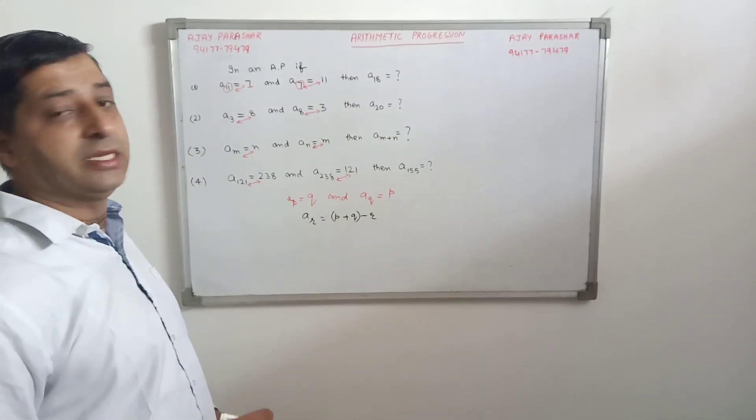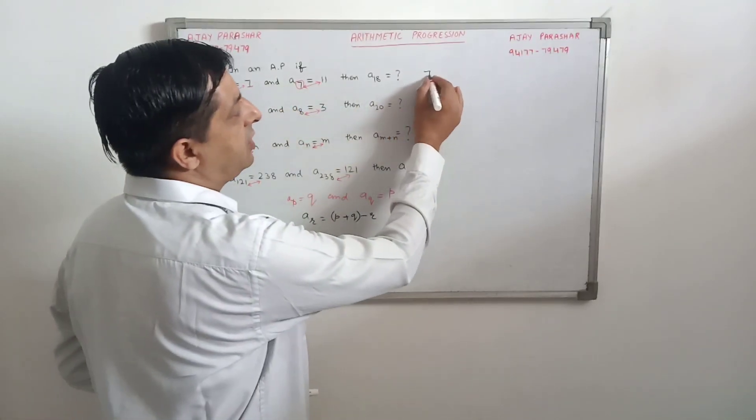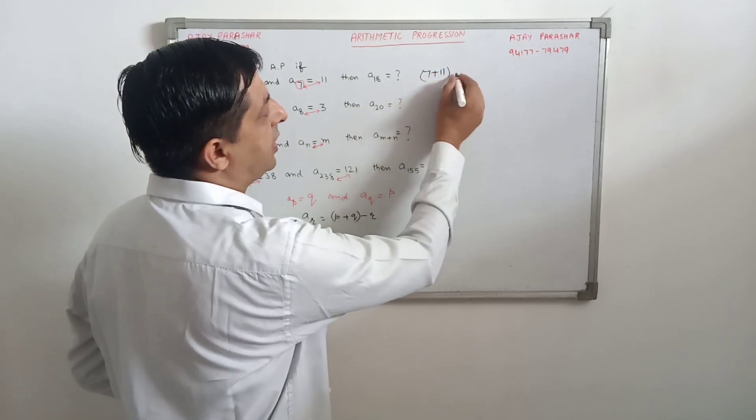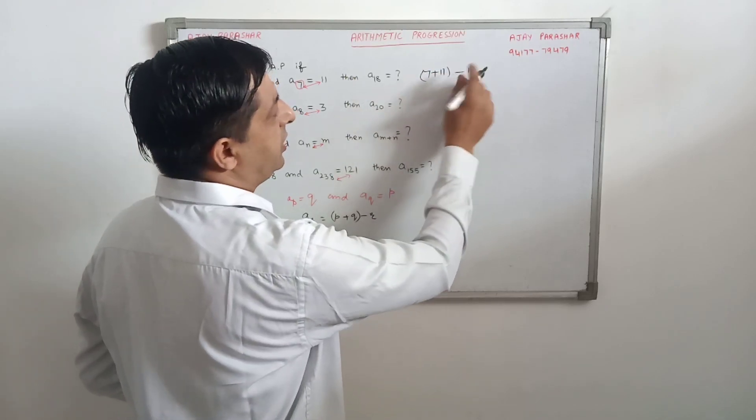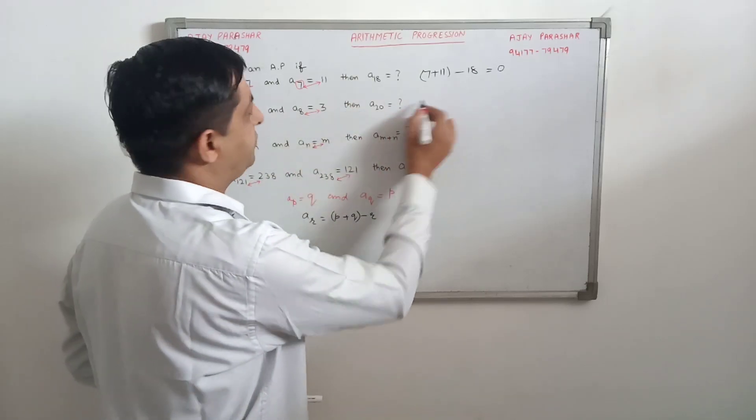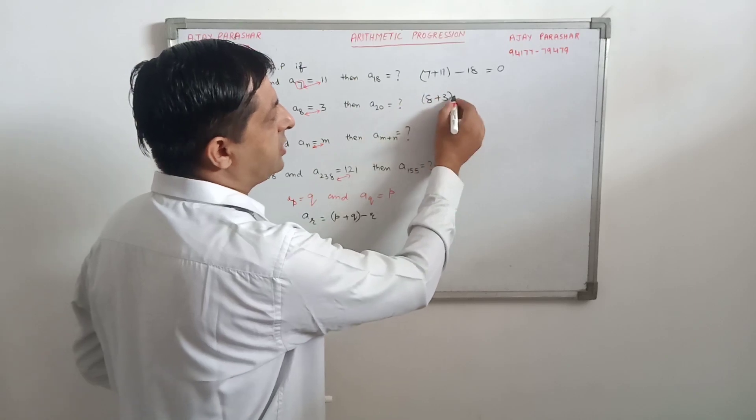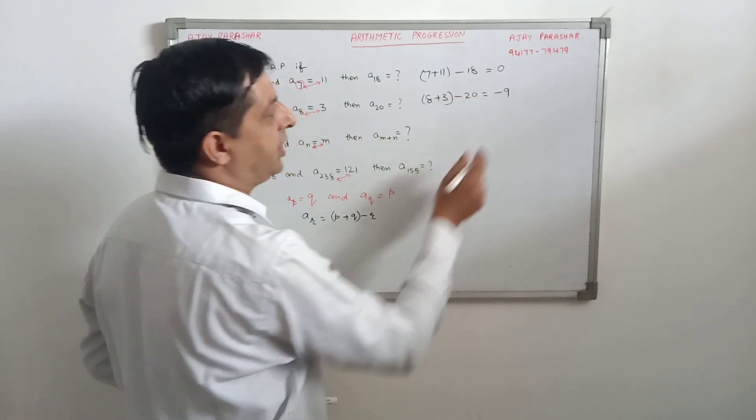Now, look here, the answer is 7 plus 11 minus 18, so 18 minus 18, this gives us 0. The same way, here, 8 plus 3 minus 20, which gives you minus 9.